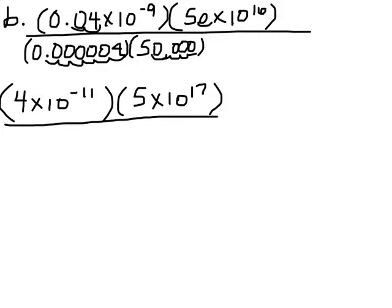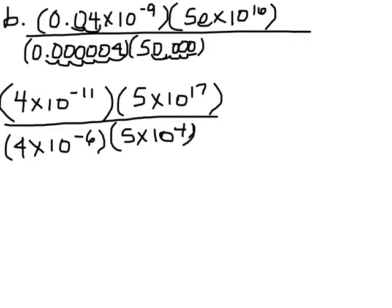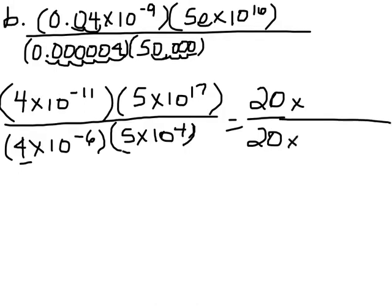And on the bottom I've got 4 times 10 to the — let's see — 1, 2, 3, 4, 5, 6 — 10 to the negative 6. And 5 times 10 to the 4th. So what I'm going to do here is 4 times 5 is 20 on the top, and on the bottom 4 times 5 is also 20. Then I'll add negative 11 and positive 17, which is positive 6.